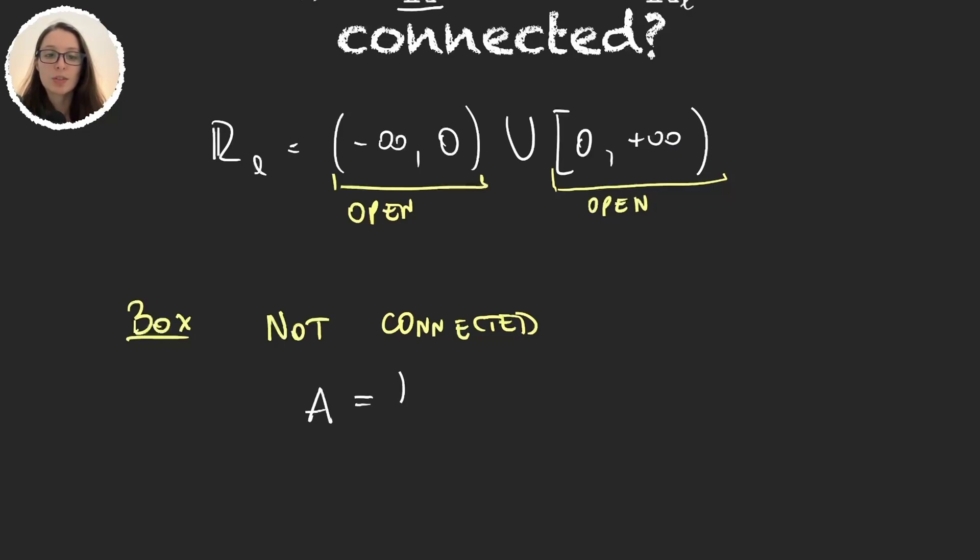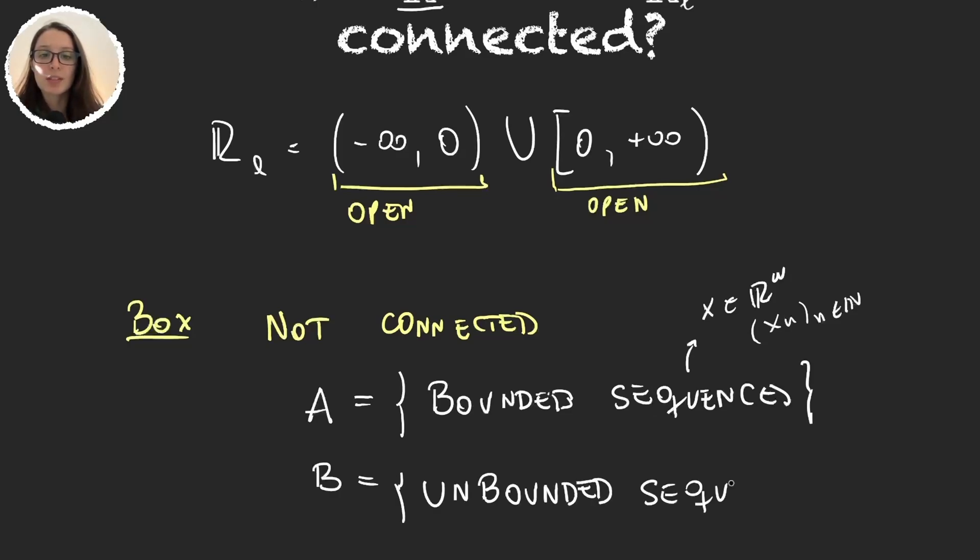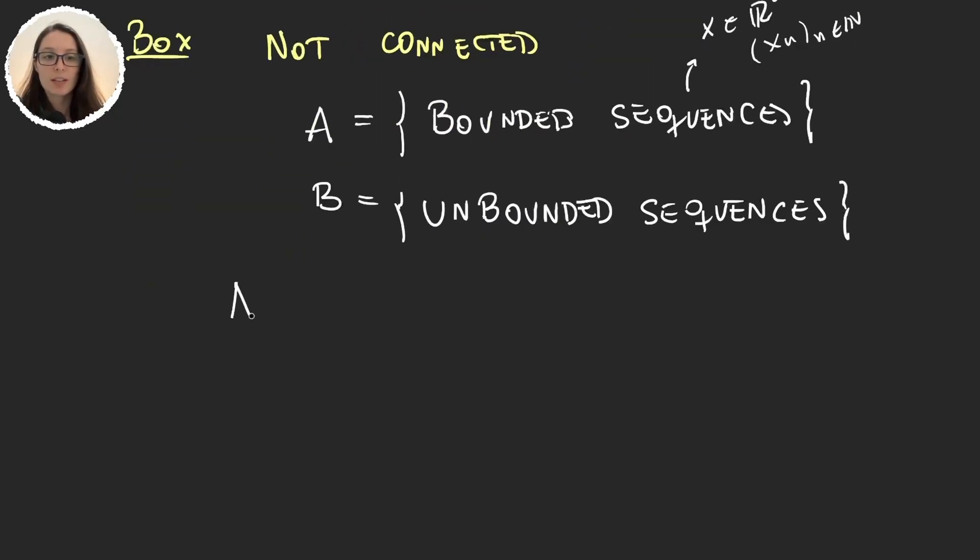Let's call it A, is going to be the set of bounded sequences. Remember that when we say sequence it's because we're working in R-Omega. So X in R-Omega is of the form X_n for n natural and so it's a sequence. And obviously the set B has to be the complement of A, so if A is the set of bounded sequences then B is going to be the set of unbounded sequences. Well obviously A and B are disjoint, and A union B is R-Omega.